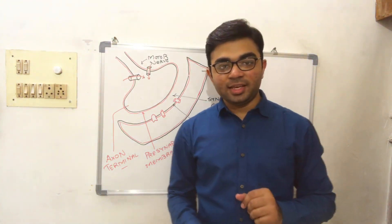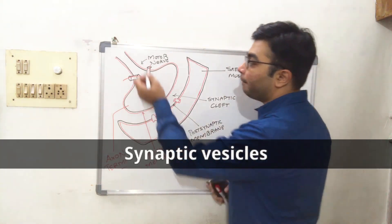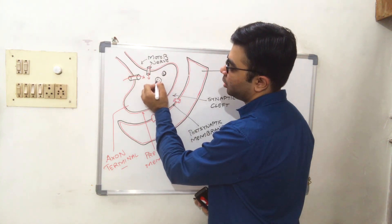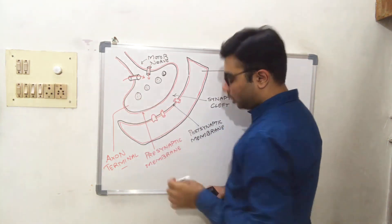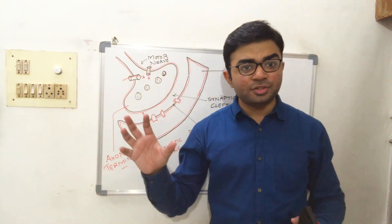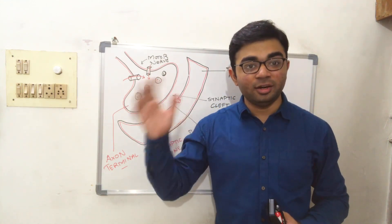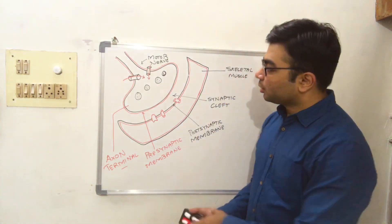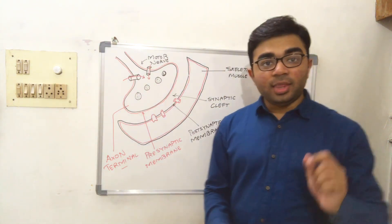Another important structure is the synaptic vesicles present in the motor nerve axon terminal. These vesicles are very much helpful in the synthesis of the neurotransmitter acetylcholine. If you haven't watched my earlier video on the structure of a neuron, I'll give a link in the description.